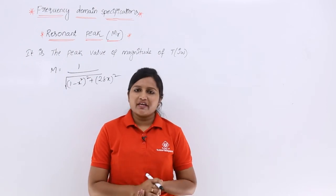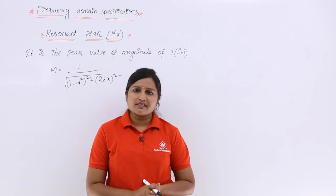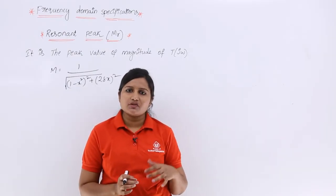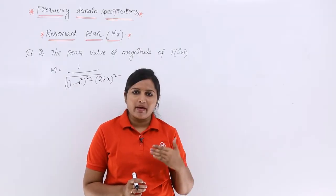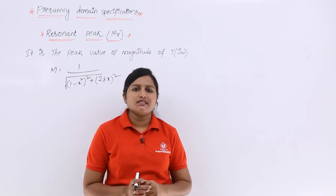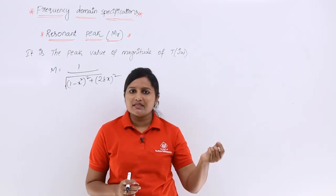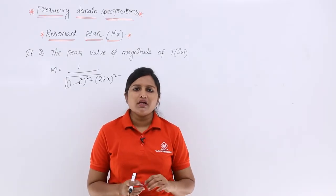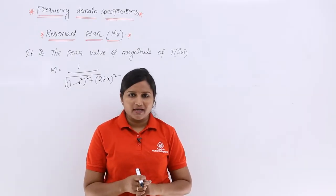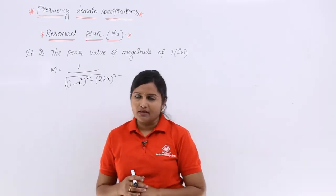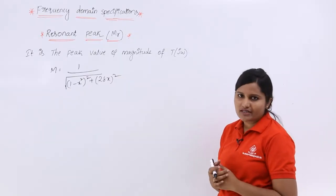In this video we are going to discuss about resonant peak. In the last video we discussed about resonant frequency — that means the frequency where we get the maximum value of magnitude is nothing but resonant frequency. So here we are going to find out that maximum value, or peak value, of magnitude, which is nothing but resonant peak. It is the peak value of magnitude of the transfer function T of j omega.